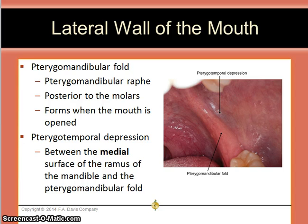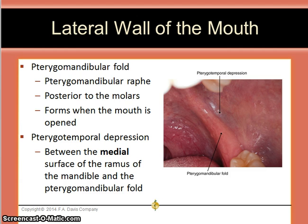The lateral wall of the mouth. You can see the pterygomandibular fold and the pterygotemporal depression. The pterygomandibular fold and the pterygotemporal depression lie medial to the mandibular ramus. The pterygotemporal depression is a landmark for local anesthesia of the mandible. The pterygomandibular fold is the mucosa which covers the pterygomandibular raphe, the common connective tissue attachment of the superior constrictor and buccinator muscles.